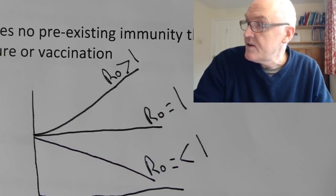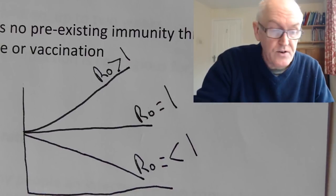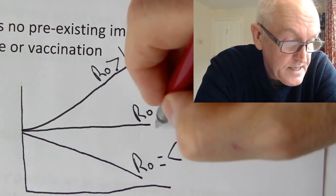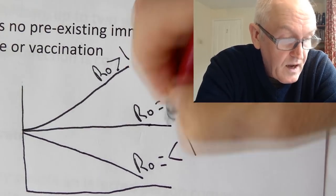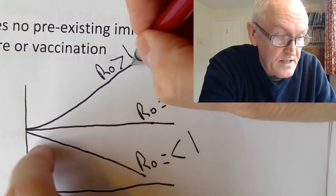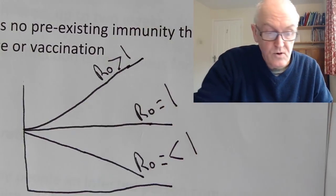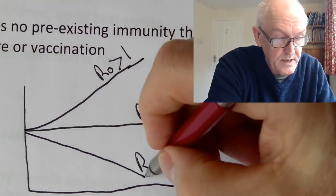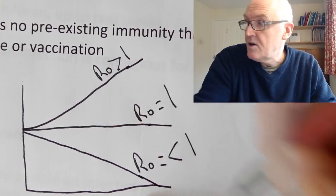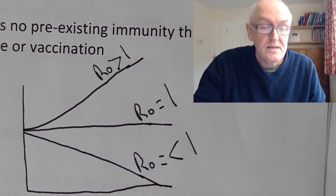So those are the three possibilities: R0 equals one, in which case everything stays as it is; R0 is greater than one, in which case the number of cases will rise; and R0 is less than one, in which case the number of cases will fall and hopefully eventually go down to zero.